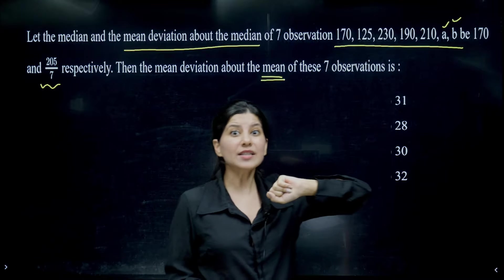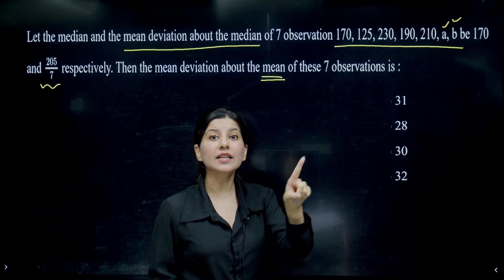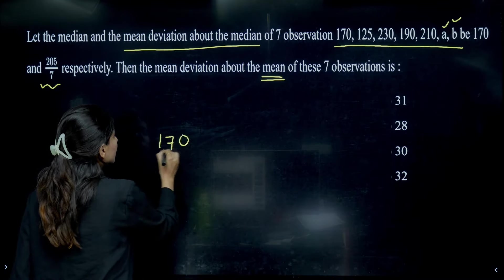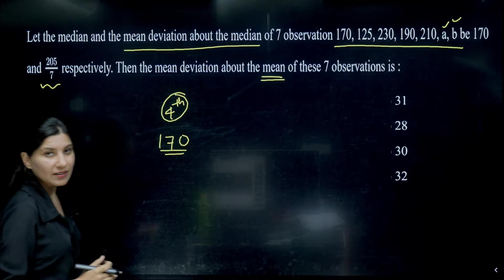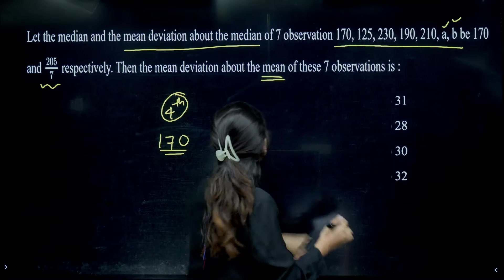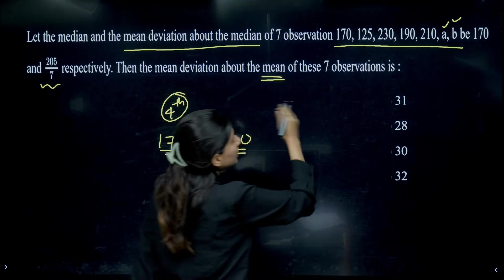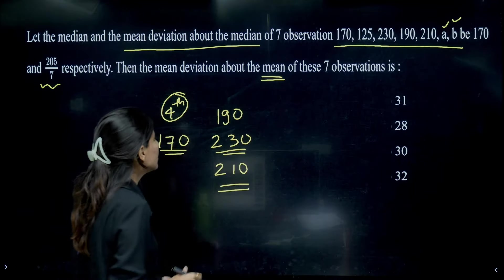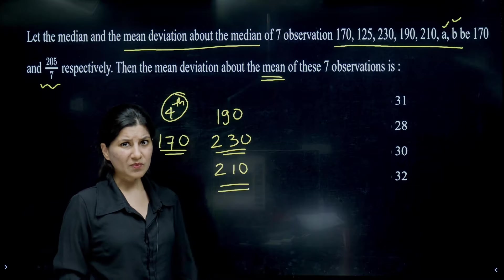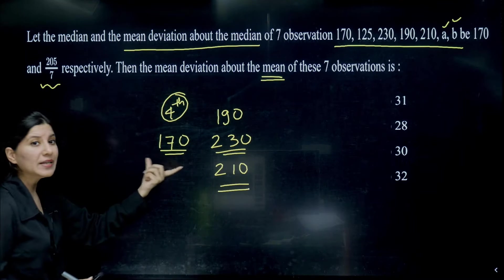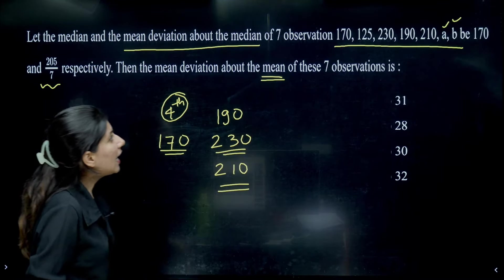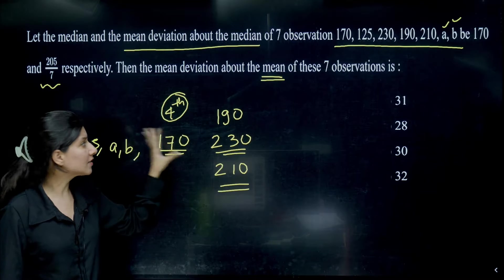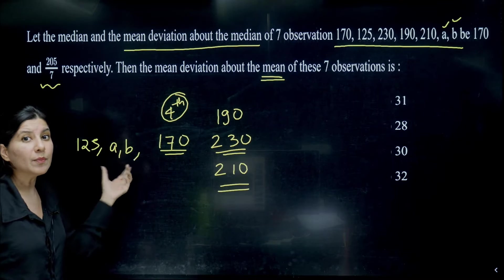Median is given as 170. What is median? You have to arrange all seven observations in increasing order, and whichever lies in the middle is your median. For seven observations, the fourth position is occupied by 170 — three values before it and three after. So 230, 190, and 210 will be on the right-hand side. Since 125 lies on the left and we need three values before 170, A and B must both lie on the left-hand side — meaning both A and B are less than 170.